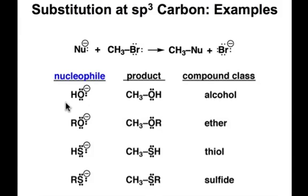In the first example, you'll recognize the nucleophile hydroxide, which can replace that carbon-bromine bond with a carbon-oxygen bond to make the new product an alcohol.